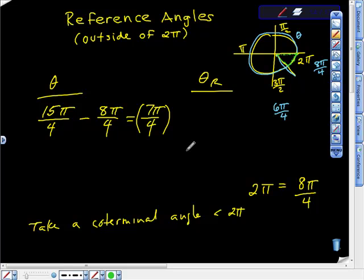So how would you find that? Well, what you would do to find that is you would take 2π, right? 2π minus that value, minus 7π fourths.